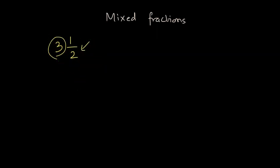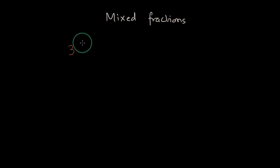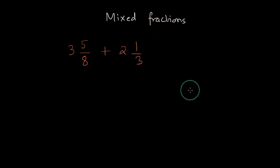Let's take an example to perform addition first. Addition is a simpler operation among addition and subtraction. So let's say we have 3 wholes and 5/8, and we want to add it to 2 wholes and 1/3. How are we going to do this?